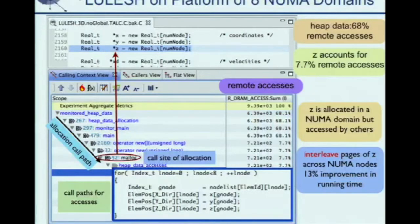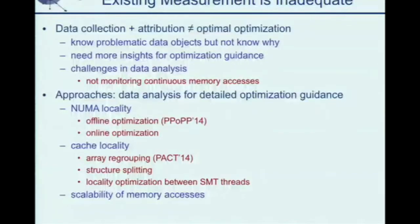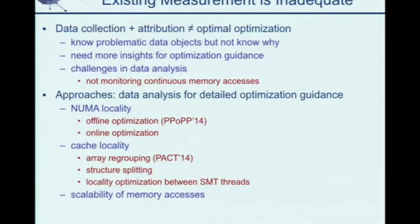But is interleaved allocation the best? Actually, it's not — we can do better. Only the measurement method with data attribution is not enough. We do data collection and data attribution, but there are still a lot of efforts done manually. We don't glean enough deep insight into program execution. What we want is more insight and intuitive guidance for optimization. Simply using performance counters cannot meet this requirement. My existing work focuses on the analysis part, beyond just data attribution and collection.